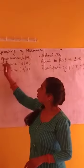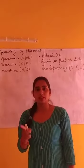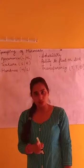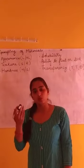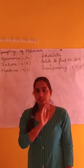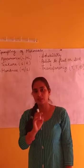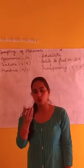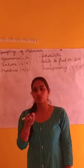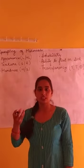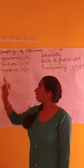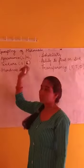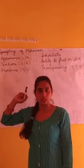The second property is hardness — sorry, let me clarify. Examples of lustrous materials are gold and silver, as they are shiny. That is the property of being lustrous.